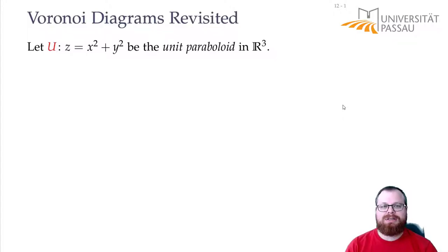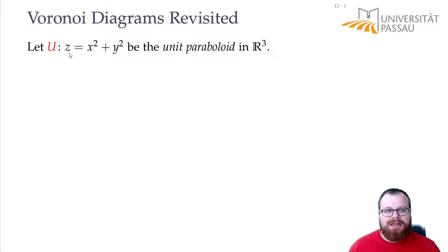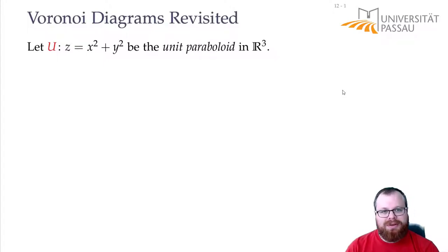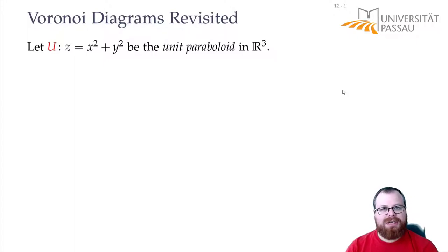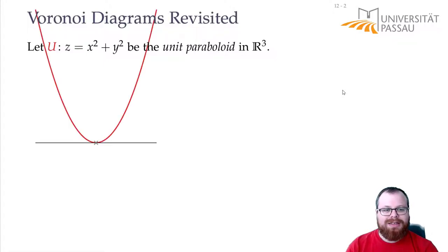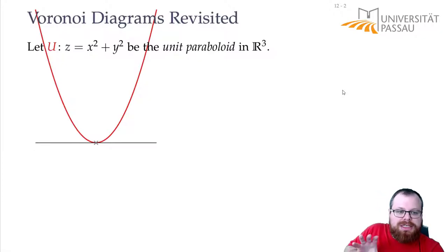We want to look at the unit paraboloid in three-dimensional space. That's defined as the set of coordinates where z equals x squared plus y squared. I will show you the whole thing in two dimensions, because drawing in three dimensions is not so easy. In the end, I will show you a demo also in three dimensions that hopefully makes it clearer. So this is our unit paraboloid in R2. Imagine we just look at it from the side for now.